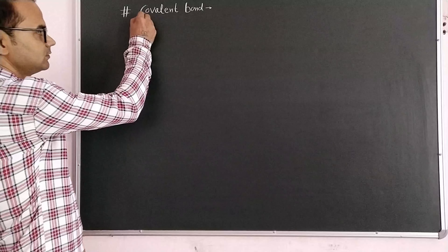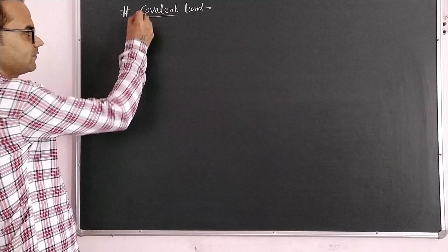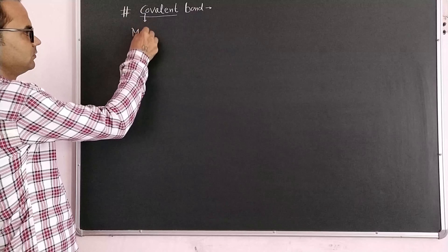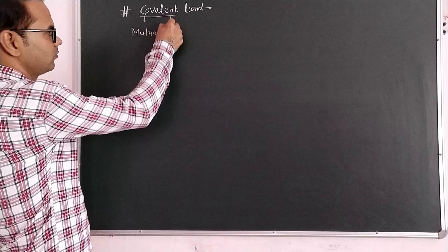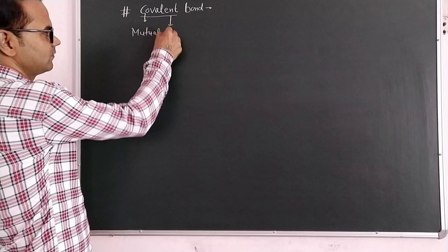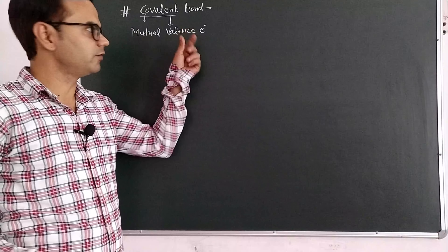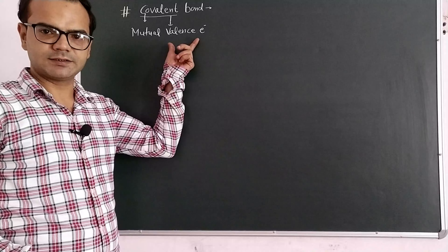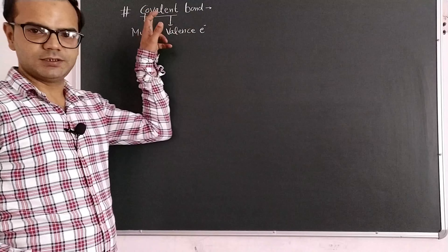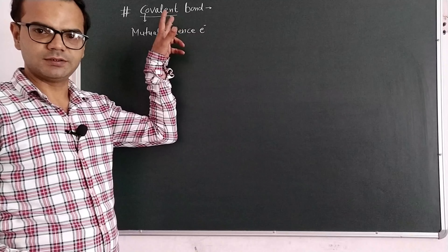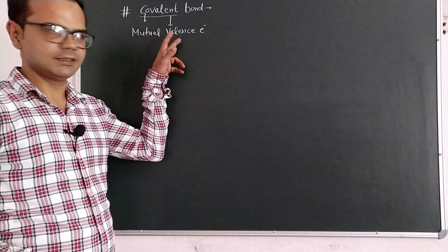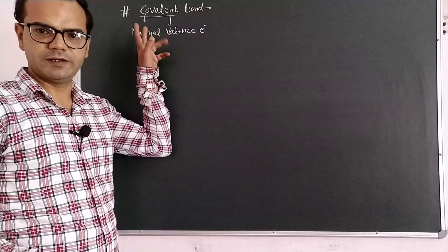As the name indicates, 'co' stands for mutual and 'valence' stands for valence electron. So the bond formed by mutual sharing of valence electrons is called a covalent bond. The number of electrons shared is called covalency.